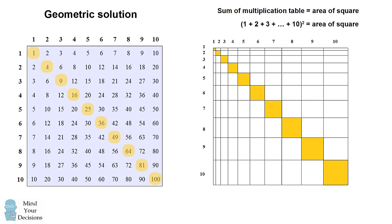So the sum of all the numbers inside the multiplication table will be the sum of the numbers from 1 to 10 and squared. So that will give us the area of the big square and the sum of all the numbers in the times table.